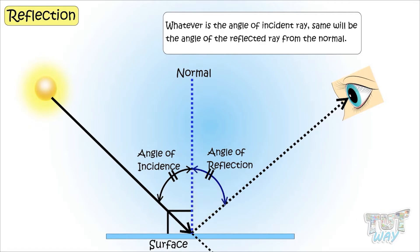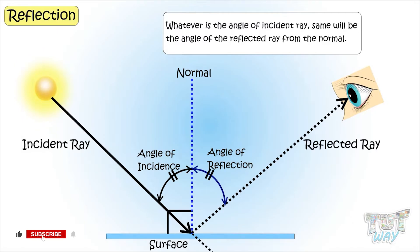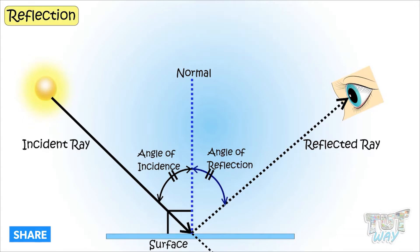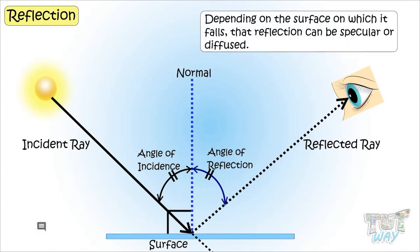Whatever will be the angle of the incident ray, equal will be the angle of the reflected ray from the normal. But depending on the surface on which it falls, the reflection can be specular or diffuse.